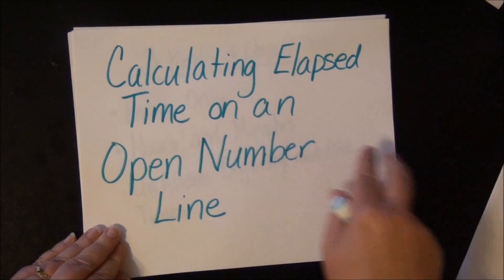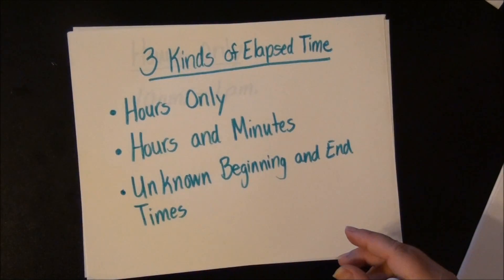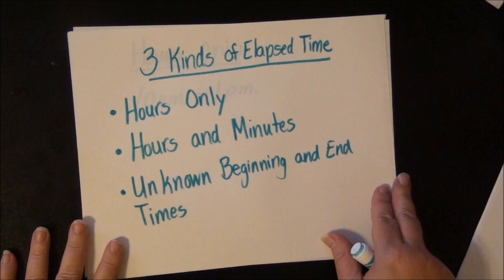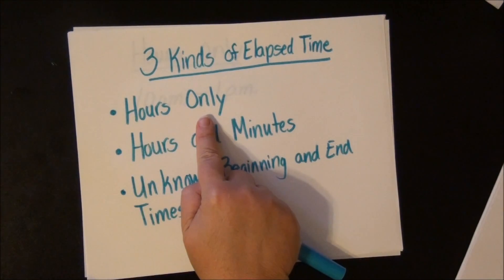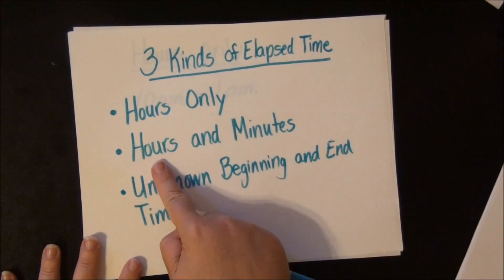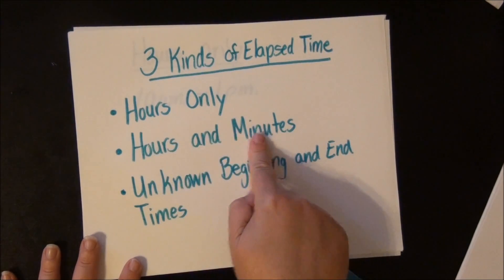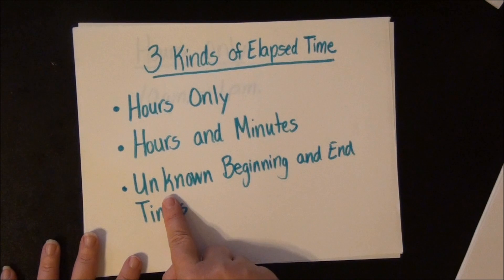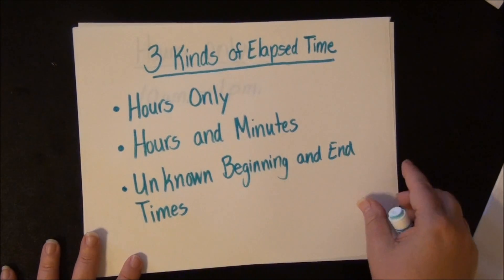So that's what elapsed time means — time that has gone by. You already know how to use an open number line to round numbers, so we're going to talk about three kinds of elapsed time: where you're given only the hours and need to know how much time is in between; the hours and the minutes; and where you know the amount of time something takes but you have either an unknown beginning or an unknown end time.